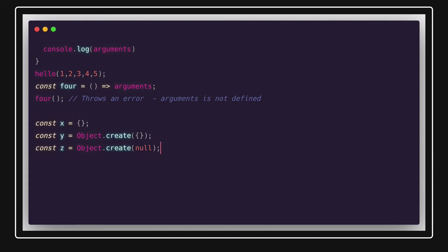Now let's talk about ES6 features. Popular ES6 concepts include destructuring, rest parameters, spread operator, classes, arrow functions, generators, promises, and object destructuring. Regarding var, let, and const: var provides function-level scope, let provides block-level scope, and const makes the value reference constant — though you can still change properties of a referenced object.